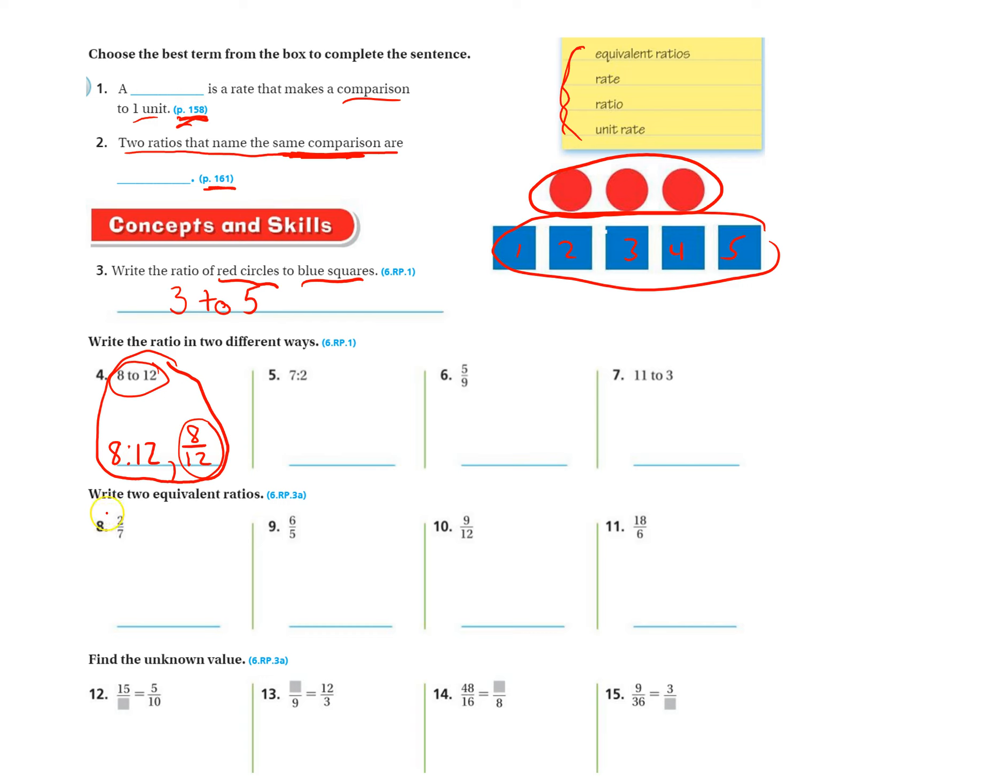Number eight through eleven, equivalent ratios. And you need two of them, not just one. So you're going to take the original ratio that they gave you, and you can either multiply or divide. I like to multiply just because when you multiply, you can pick any number you want other than one. When you divide, you have to make sure you use a common factor.